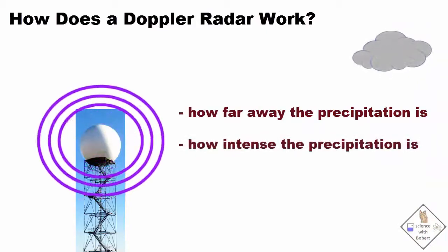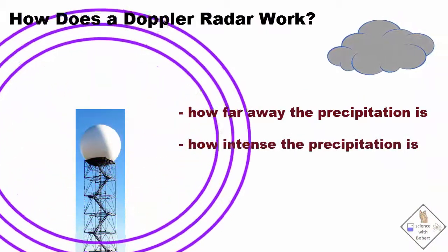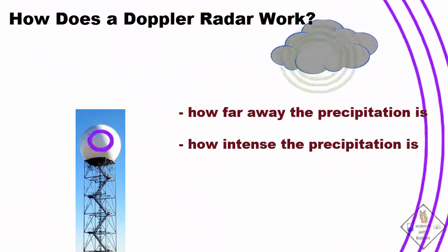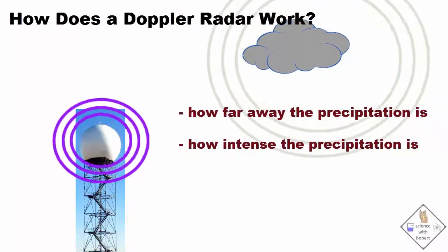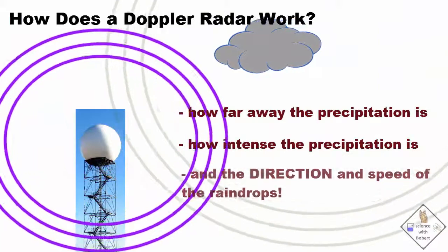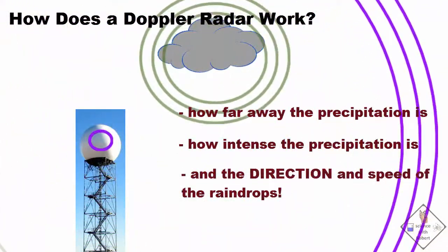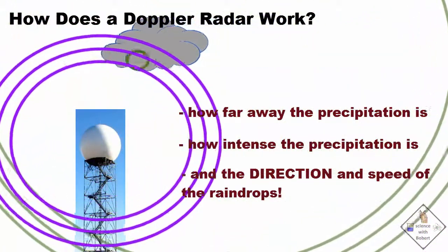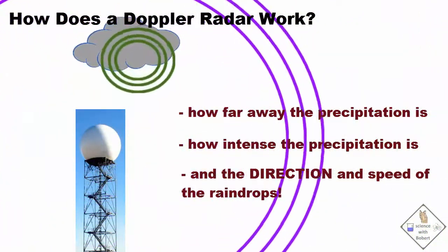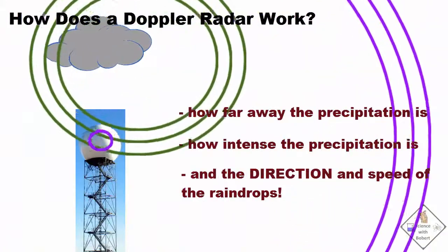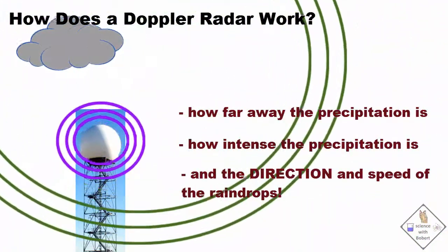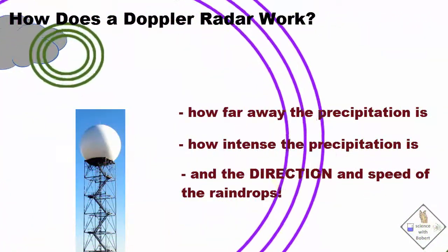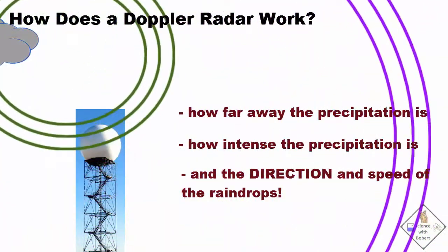Where the Doppler effect comes in is when the radar system determines which way the raindrops are moving and how fast. Pulses of radio waves are sent from the Doppler radar, which bounce off precipitation in the clouds.